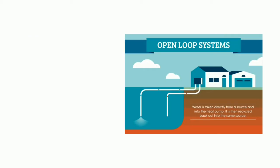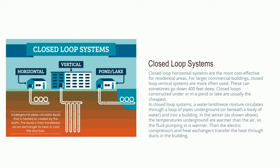About 10 feet down, the earth maintains a nearly constant temperature of 54 degrees. We can tap into this energy to provide heating in the winter and cooling in the summer. During the winter months, the air is usually cooler than the temperature below the ground. The solution circulated in loops of pipe underground absorbs the earth's heat. This heat is brought to the surface and transferred to the heat pump, which warms the air and regulates the heating temperature. The heating system warms the air further to a comfortable temperature.